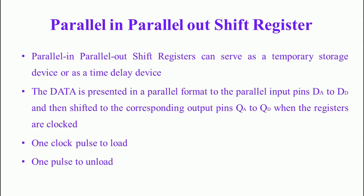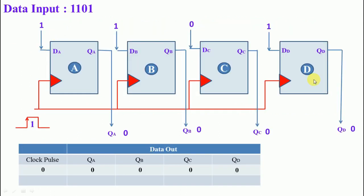This is the construction of the parallel in parallel out shift register. Here DA is the first input, DB is the second input, DC is the third input, and DD is the fourth input. The corresponding flip-flop outputs are the parallel outputs QA, QB, QC, and QD. All flip-flops are connected to the same clock pulse.